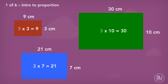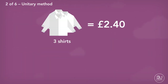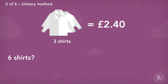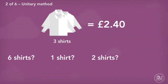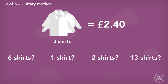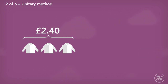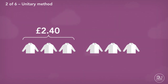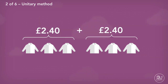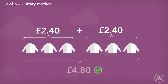Let's use another example to see other ways to use proportion. Three shirts cost £2.40. How much would six shirts cost? How much would one shirt cost? How much would two shirts cost? Or even 13 shirts — how much would they cost? We are told the relationship between two things: shirts and the cost, similar to what we saw with the rectangles example. Six shirts are double the amount of three shirts, so the price would also double. Six shirts cost £4.80.